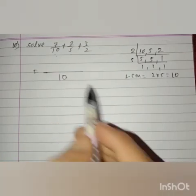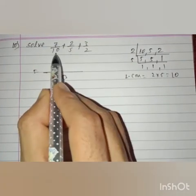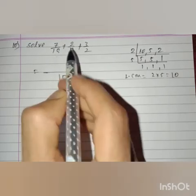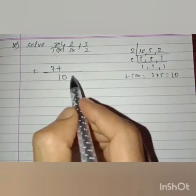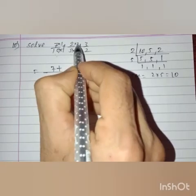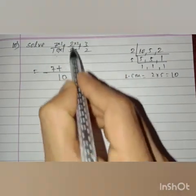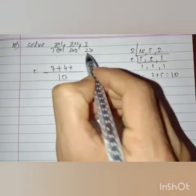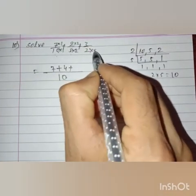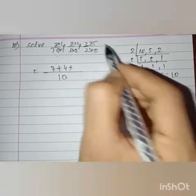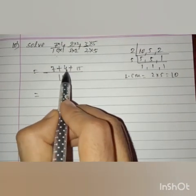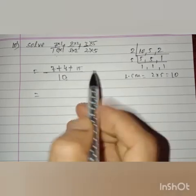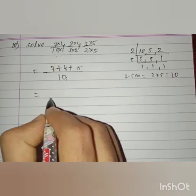To get denominator 10 from each fraction: 7 by 10 stays as 7. For 2 by 5, multiply numerator and denominator by 2: 2 times 2 is 4, denominator 5 times 2 is 10. For 3 by 2, multiply numerator and denominator by 5: 3 times 5 is 15, denominator 2 times 5 is 10. Adding numerators: 7 plus 4 plus 15 is 26. So we get 26 by 10.